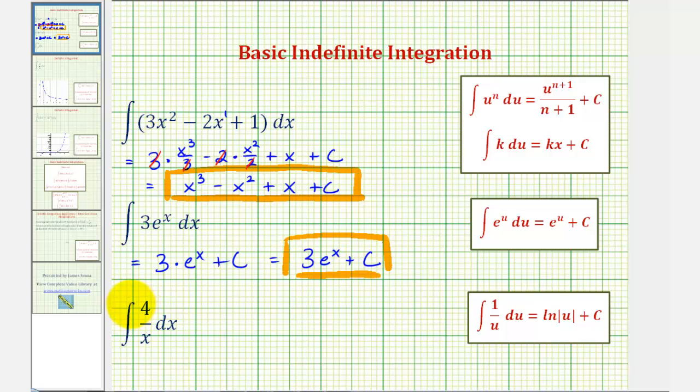And for the last example, we have the integral of four divided by x, integrated with respect to x. In this case, it might be helpful to factor out the four to better recognize the integration formula. We could write this as four times the integral of one divided by x dx. Applying our integration formula here on the right, we would have four times the natural log absolute value of x plus c. This family of functions have a derivative of four divided by x.